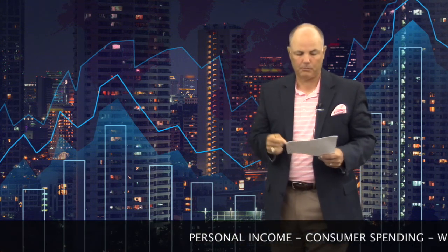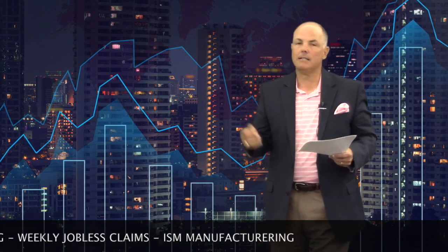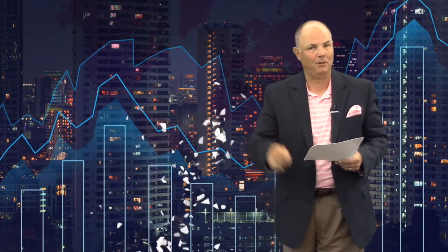So this week, as far as data points, personal income, consumer spending, weekly job claims on Friday, and then the ISM manufacturing number on Friday. I think we have to look at that pretty strong. But the big one's going to be on Tuesday, GDP. Looking for a 1% number, 1.1%. And we have not been over 1% for quite a few quarters. So we'll look to that as well.